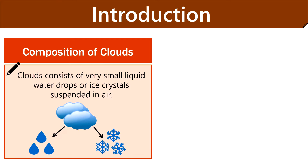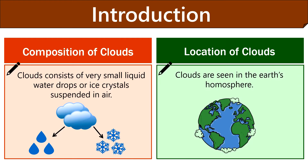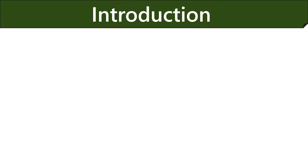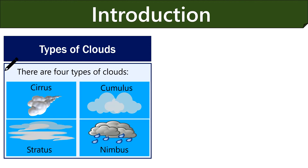Now the question is, in which region are these clouds located? The answer is, clouds are seen in the region of Earth's homosphere that includes the troposphere, stratosphere and mesosphere layers. Between these layers, clouds appear at different levels, namely low, mid and high level clouds.